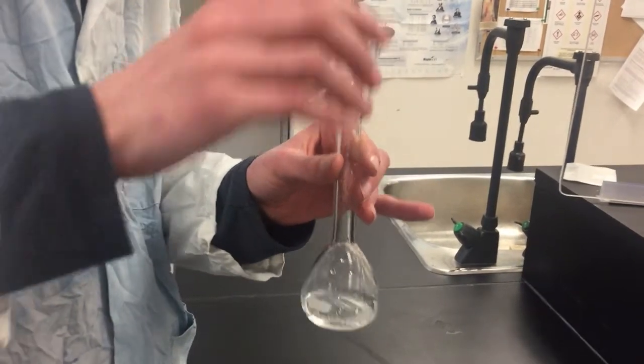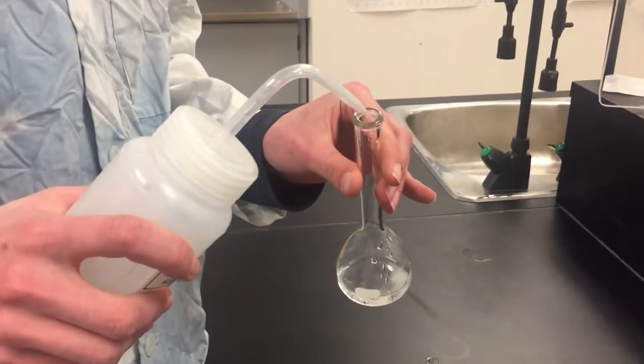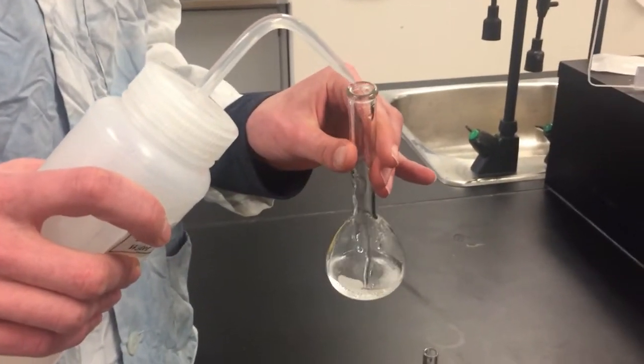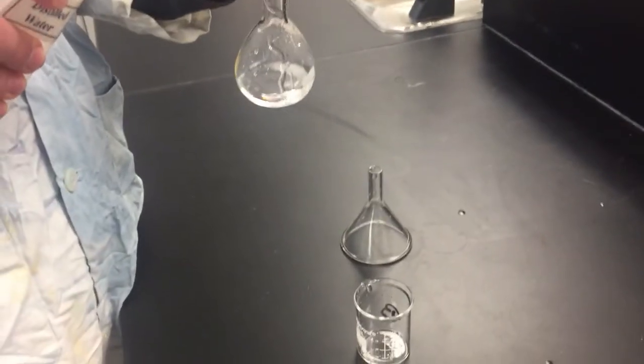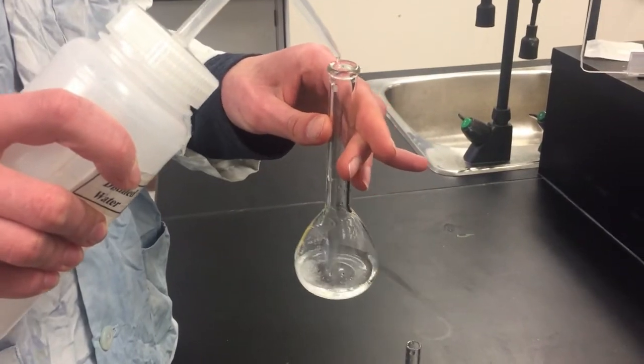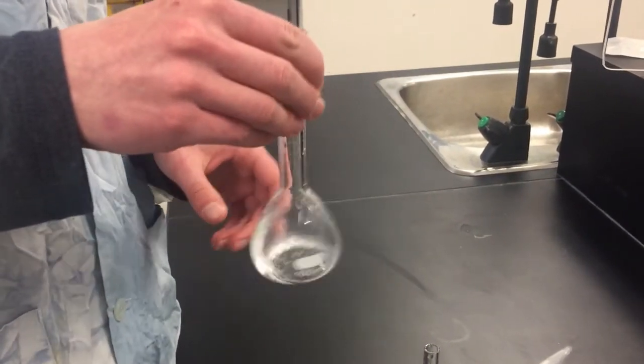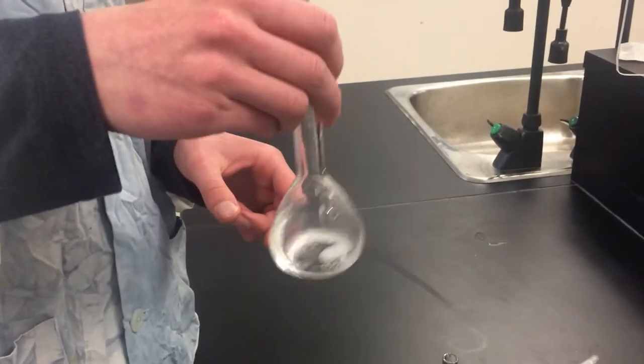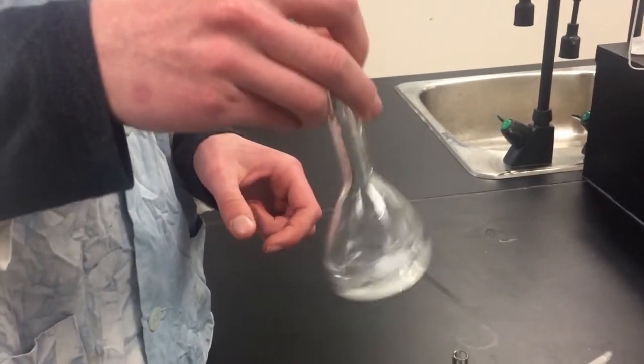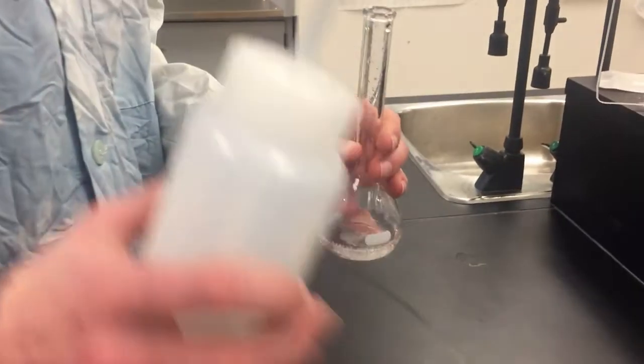Here we are making our solution of oxalic acid. We've rinsed every speck of oxalic acid that we weighed out of the beaker and into the flask. Now we're just going to swirl to make sure everything's dissolved. Then we will top it up carefully to the mark with distilled water.